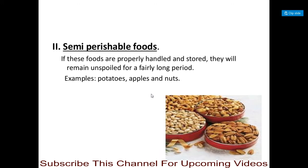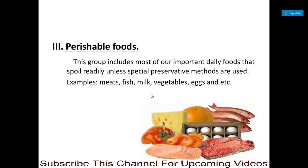The second type is semi-perishable foods. If these foods are properly handled and stored, they will remain unspoiled for a longer duration. Examples include potatoes, apples, and nuts. If you preserve or handle these carefully, they can remain in an unspoiled condition for a longer duration.